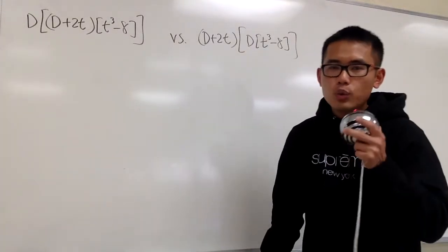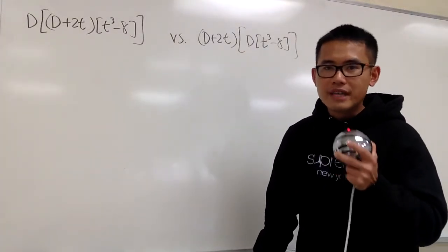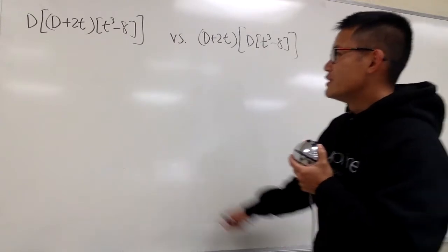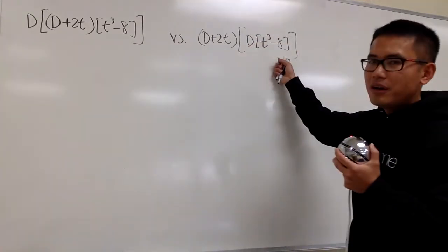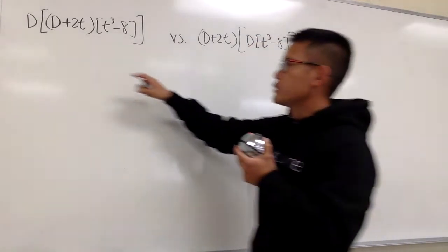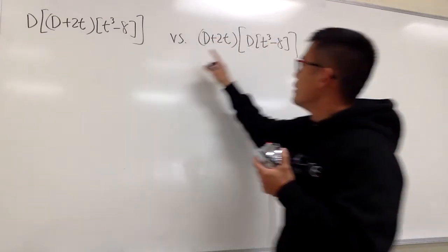In this video, I'll demonstrate when we should be careful with the order of the capital D notations. As you can see, I have two examples right here, and all I did was switch the D and D plus 2T.